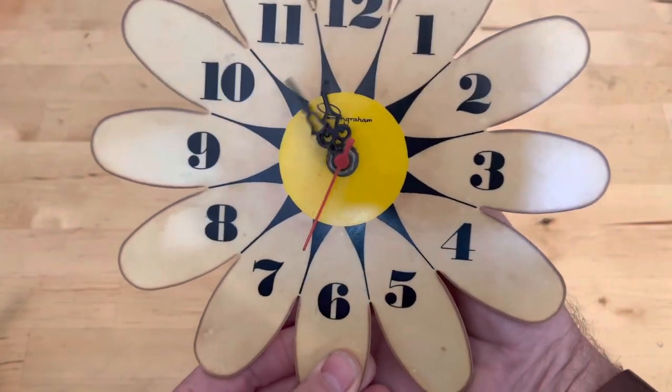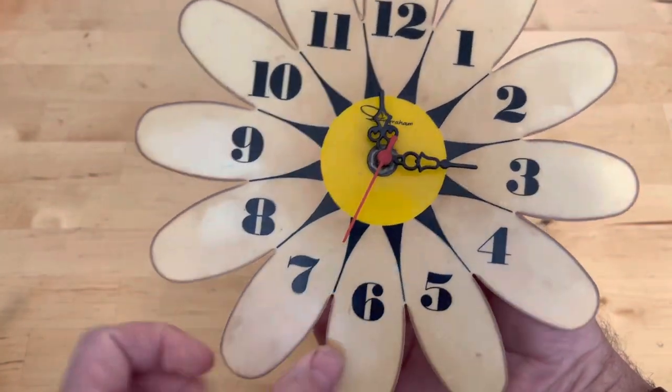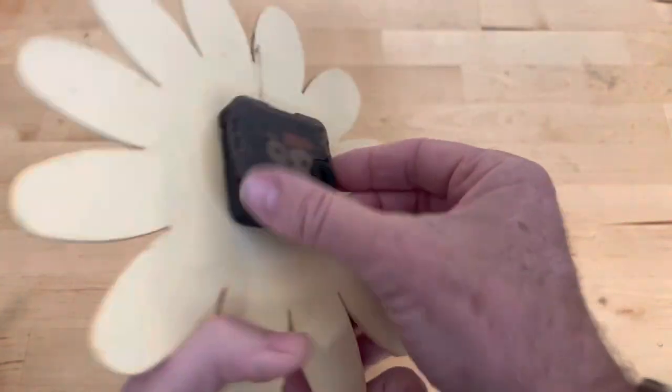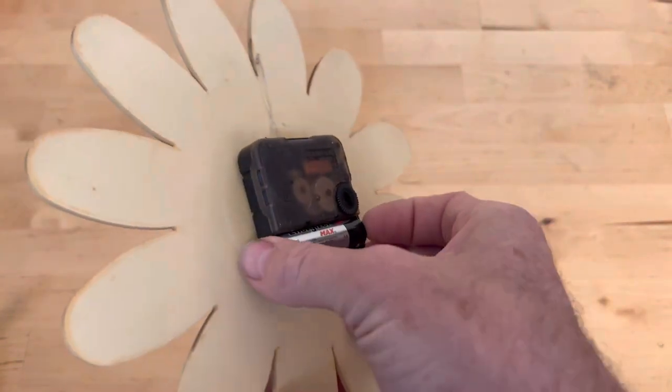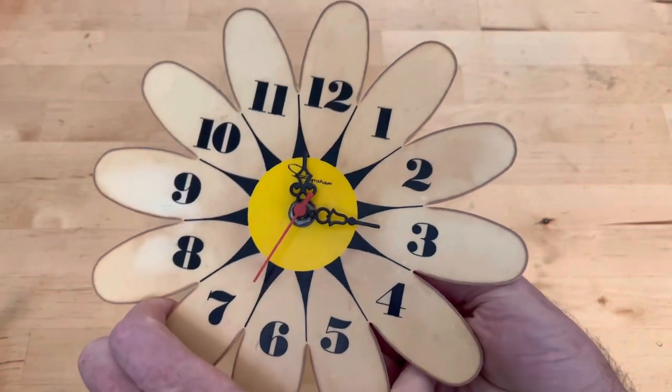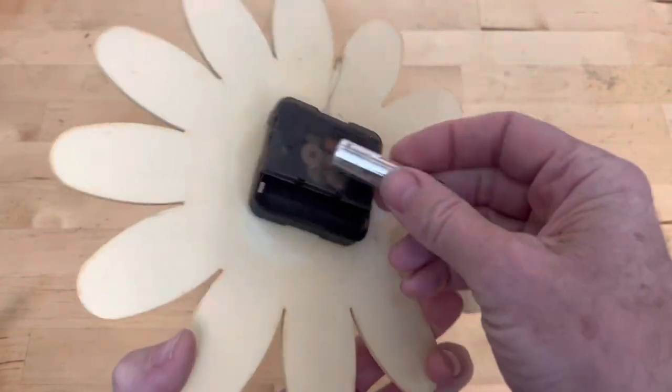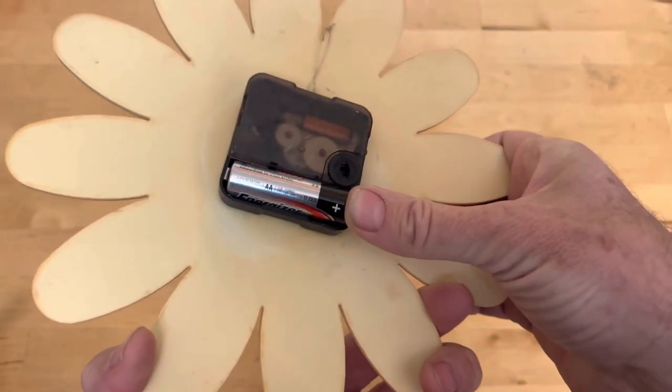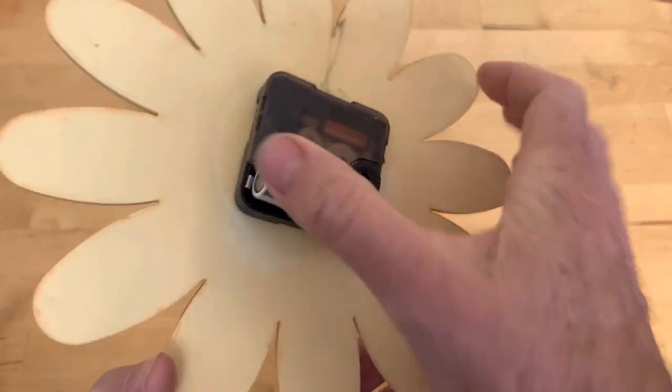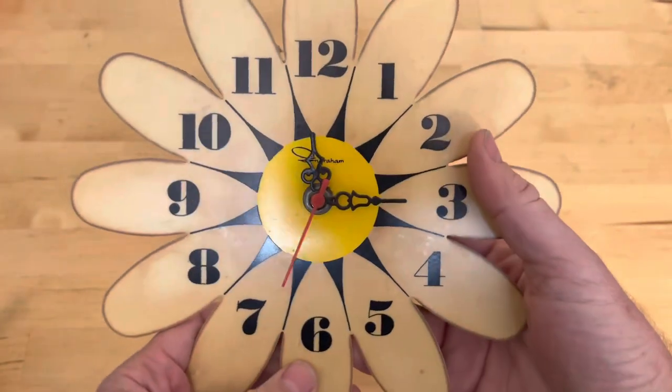When you're changing the time on your wall clock if you want to get the second hand completely accurate you can just pop the battery out and then look at the second hand on the internet and then pop it back in when it comes around to the correct time. And then your clock will be correct.